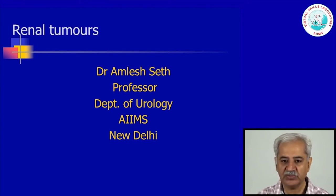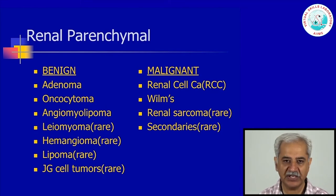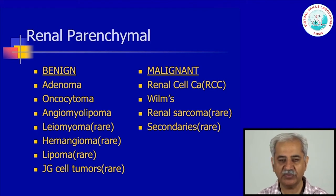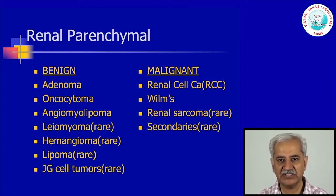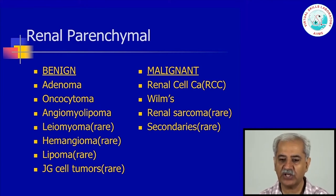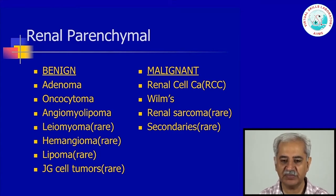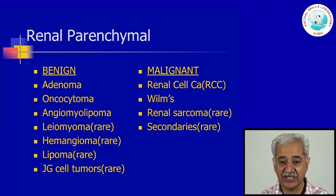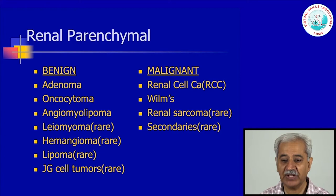When we say renal tumours, we basically mean renal parenchymal tumours. Although from the pelvicalyceal system, a number of tumours can arise. The commonest tumour from the pelvicalyceal system is a urothelial carcinoma. Sometimes in patients who have chronic irritation due to stone disease, there may be a squamous cell carcinoma in the pelvicalyceal system. Very rarely an adenocarcinoma may also exist. But I am not going to talk about the pelvicalyceal tumours; I am going to talk about renal parenchymal tumours.